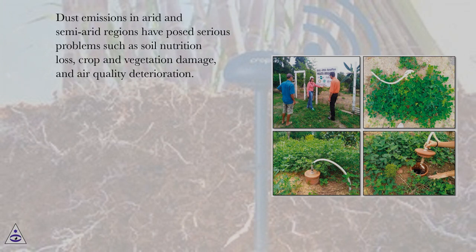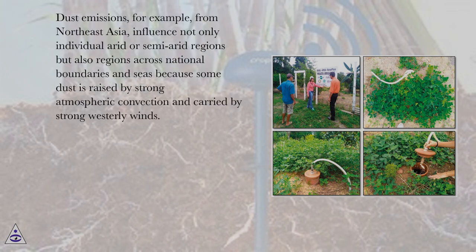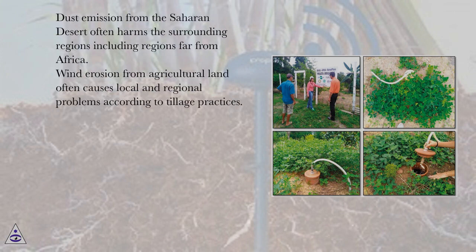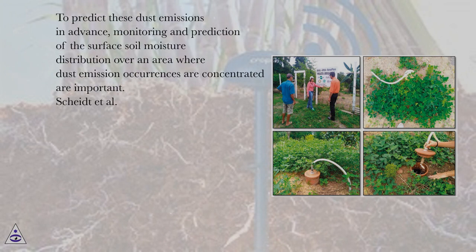Dust emissions in arid and semi-arid regions have posed serious problems such as soil nutrition loss, crop and vegetation damage, and air quality deterioration. Dust emissions from, for example, Northeast Asia influence not only individual arid or semi-arid regions but also regions across national boundaries and seas, because some dust is raised by strong atmospheric convection and carried by strong westerly winds. Dust emission from the Saharan desert often harms surrounding regions including regions far from Africa. Wind erosion from agricultural land often causes local and regional problems according to tillage practices. To predict these dust emissions in advance, monitoring and prediction of the surface soil moisture distribution are important.